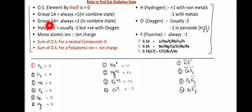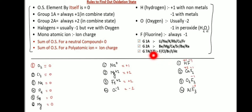Group 2A elements — Beryllium, Magnesium, Calcium, Strontium, Barium, and Radium — oxidation state plus two in combined state.